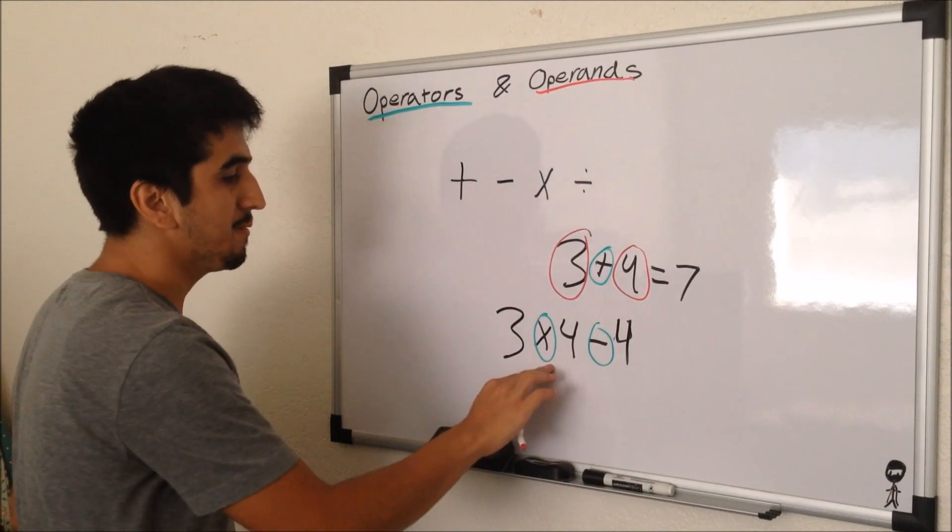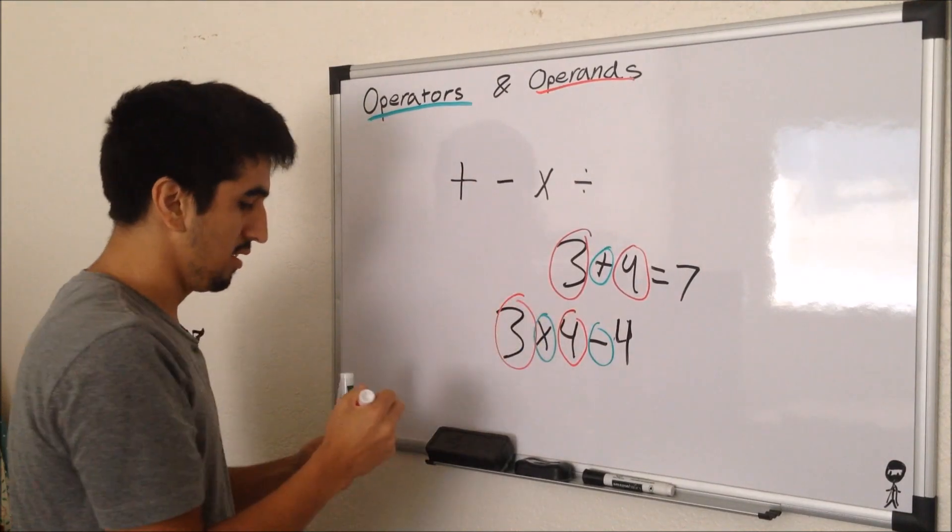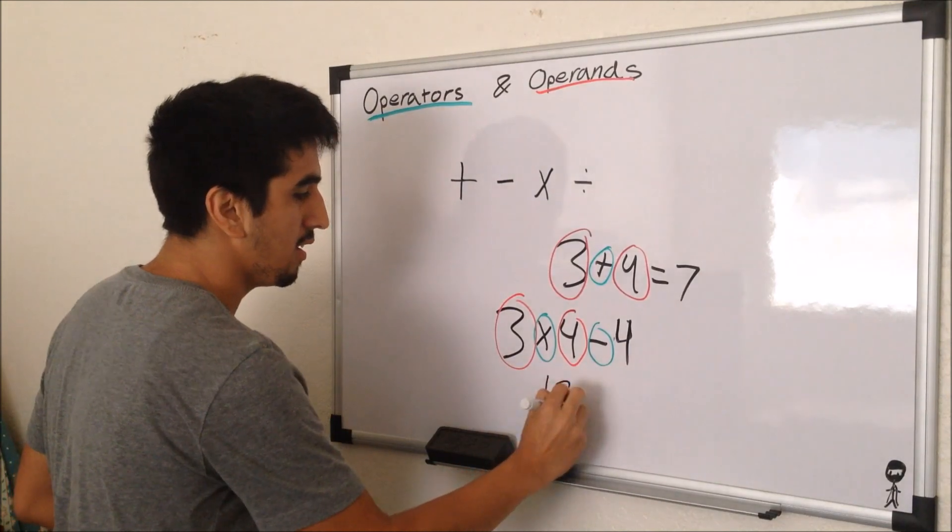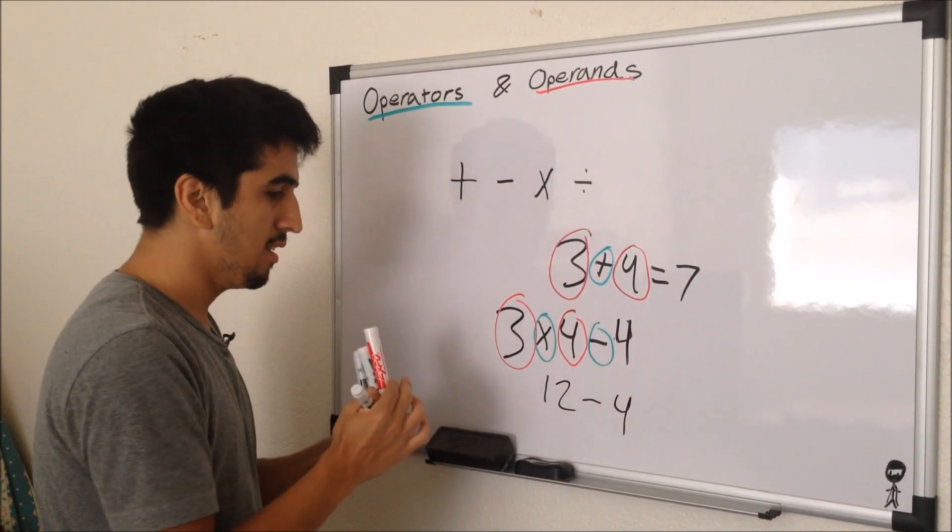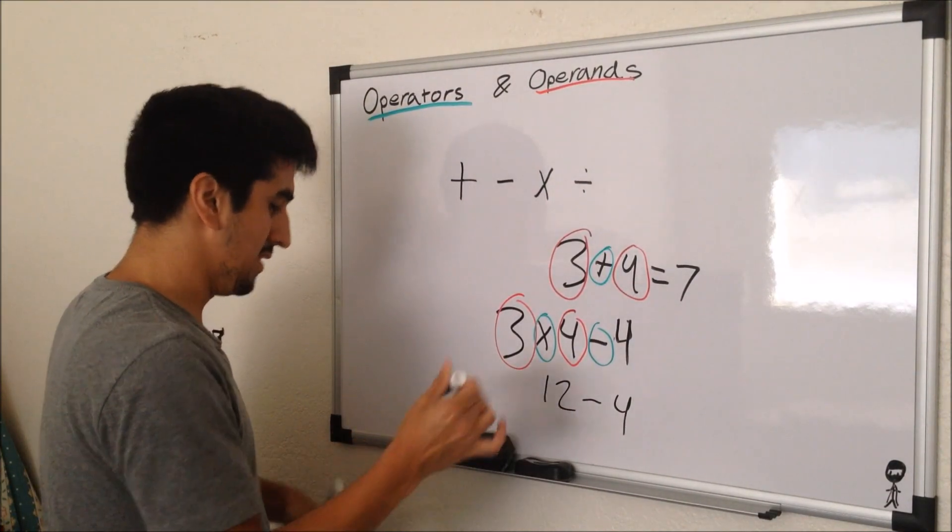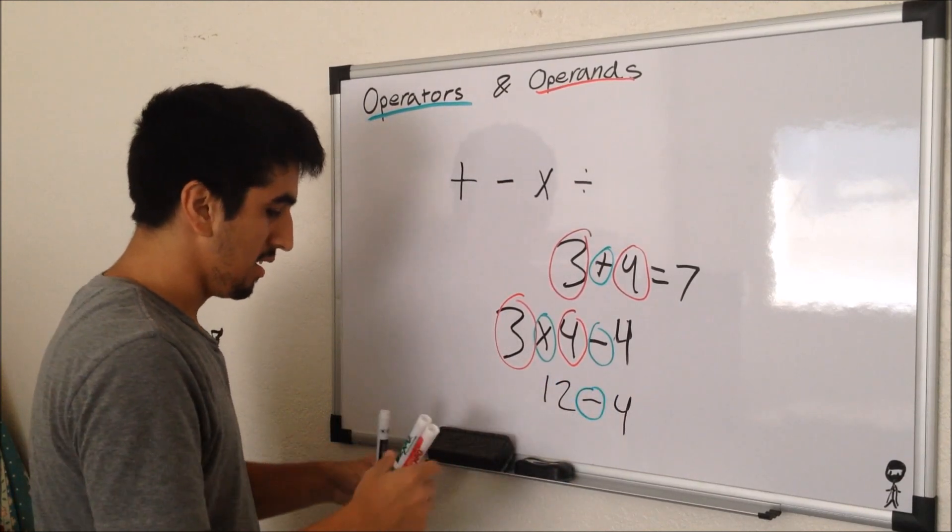So we would do the multiplication first to our two operands, 4 and 3, which would give us 12. And then we bring down the subtraction and we bring down the 4.